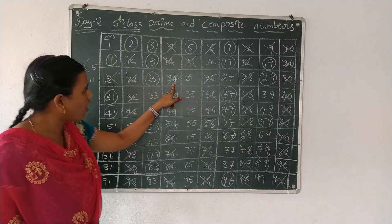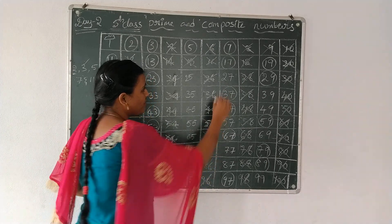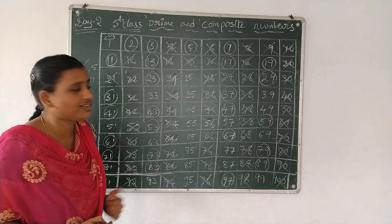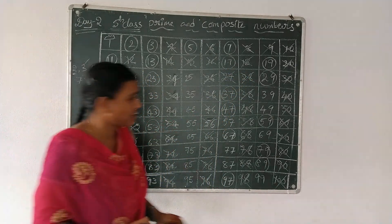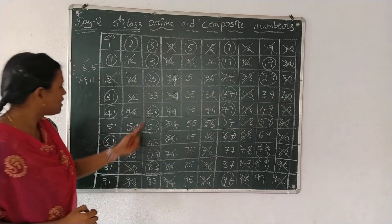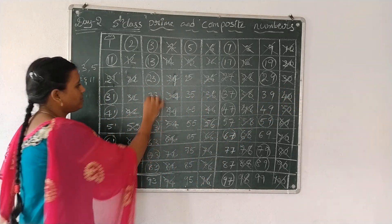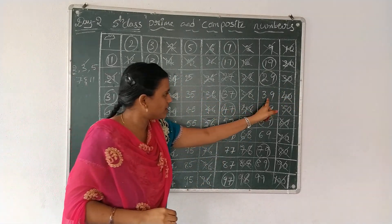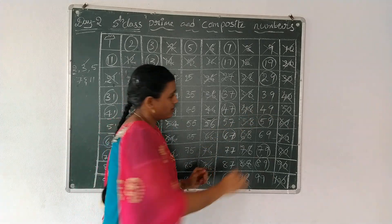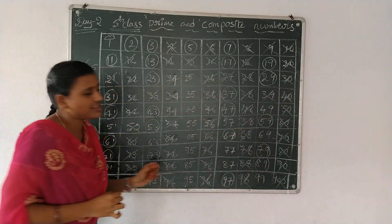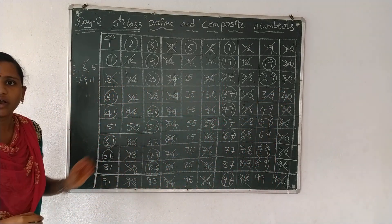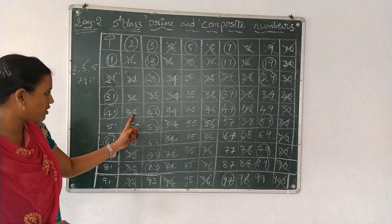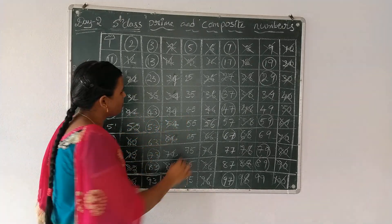24, 27. 27 is also a composite number standing in the 3 table. 30, 33, 36, 39. That means 9 is a composite number. Then 39 after: 42, 45.